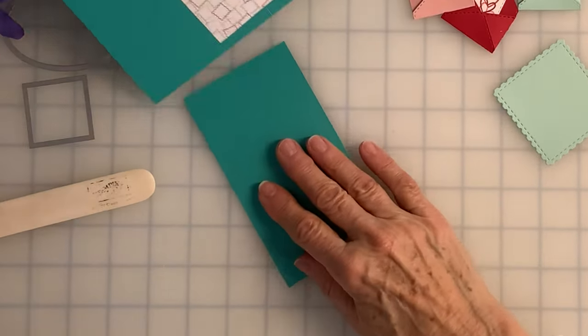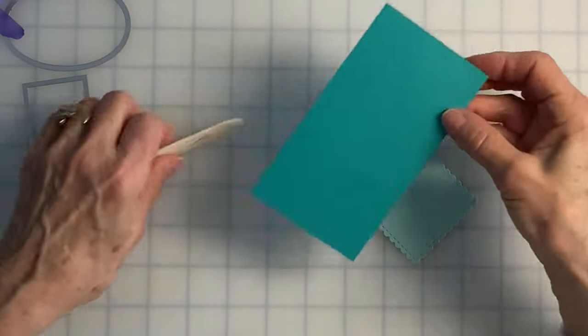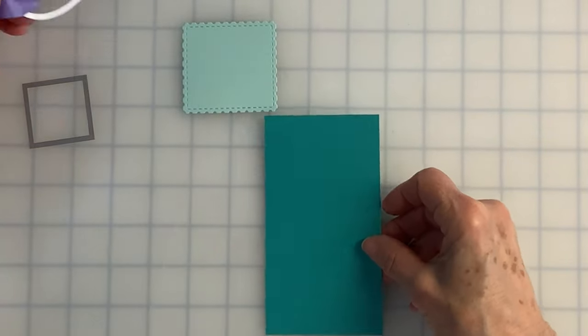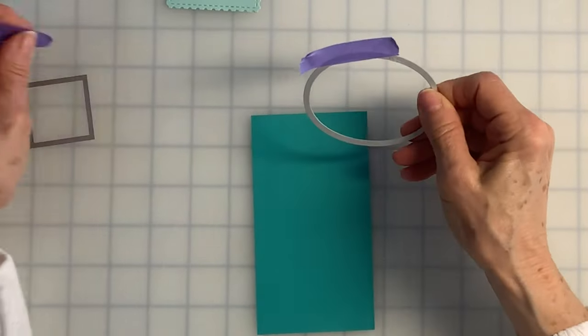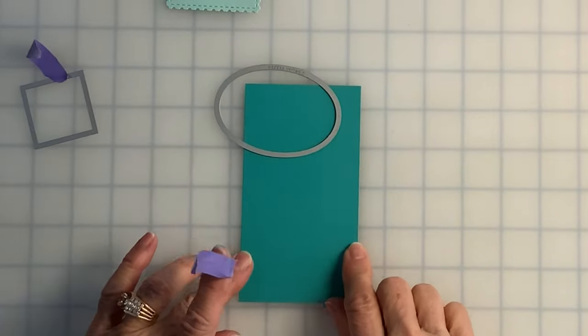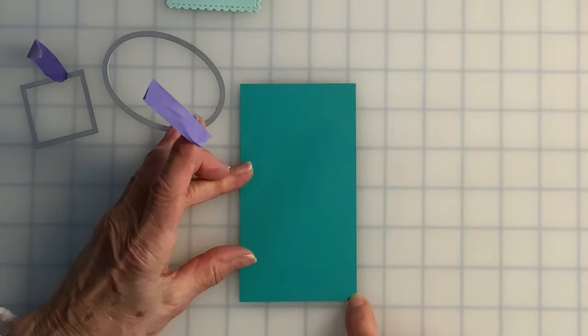The next thing we're going to do is work with our card panel for the mailbox. That is, after all, what this is all about. So the first thing I want is my oval die. I like to choose an oval die that fits the size of my cardstock. My cardstock is 3 inches by 5 1/2 inches. My oval die is exactly 3 inches.